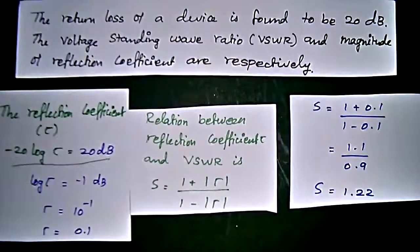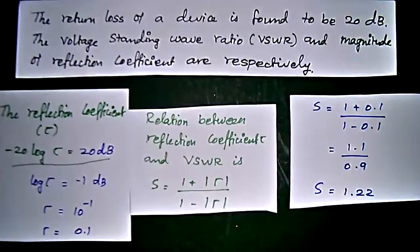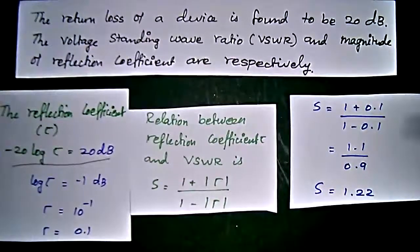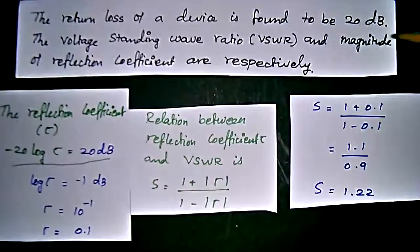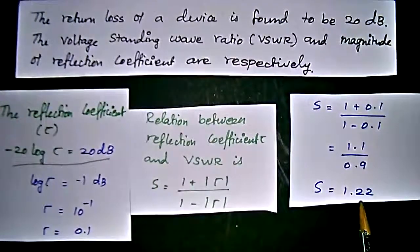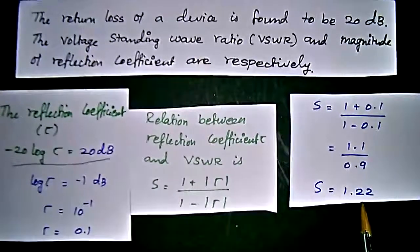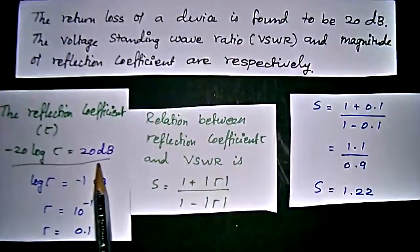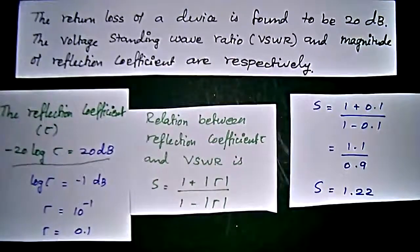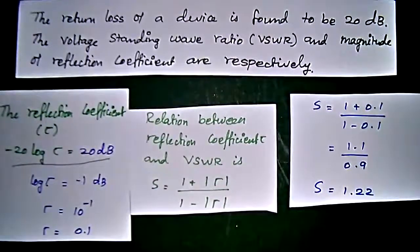By giving the return loss of a device is 20 dB, from here, the return loss of 20 dB, we find the reflection coefficient, then move to the voltage standing wave ratio. We should know these two equations to solve this problem. Thank you, your comments are welcome.